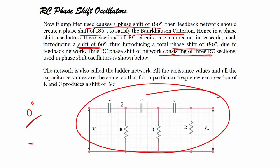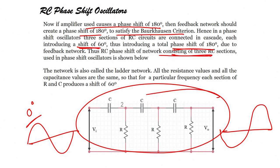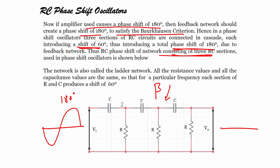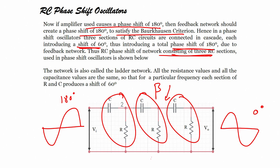The RC phase network consists of 3 RC sections as shown. If a signal is applied at the input, the output is 180 degrees out of phase. This circuit is the feedback network beta. If the output voltage has a 180-degree phase shift, then the feedback to the input will again be 0 degrees, because 180 plus 180 equals 360 degrees. The network is also called a ladder network, and all resistance and capacitance values are the same.